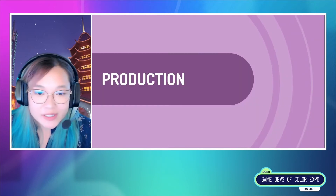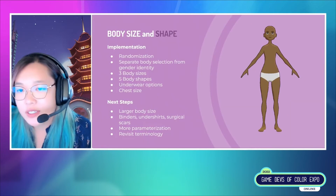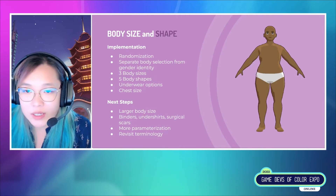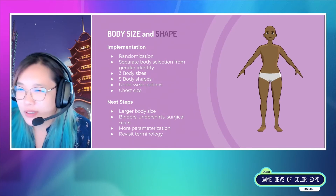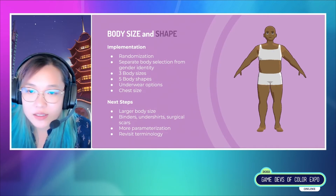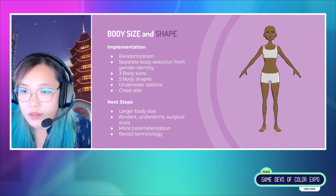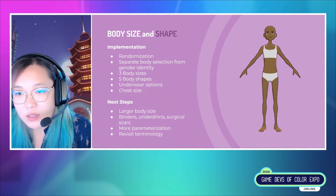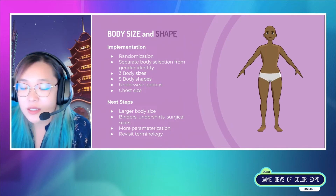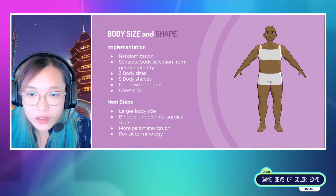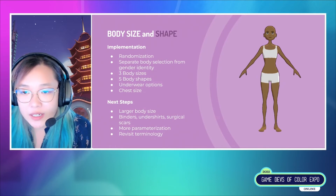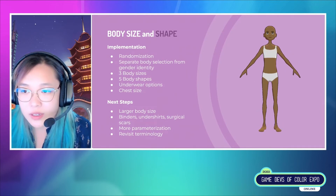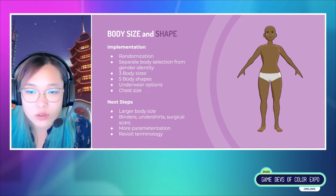On to the production itself. The first feature I tackled was the body models. This feature was special to me because I personally struggle with my body image every time I interact with a character creator. I have three body sizes — small, medium, and large — and five body shapes: rectangle, oval, heart, hourglass, and pear. To start out, I randomize these features when you enter the game. I also have underwear options and a chest size slider on top of those. Next steps would be to add another larger body size, show binders and surgical scars, and include more parameterization to control limb sizes, height, and so on.